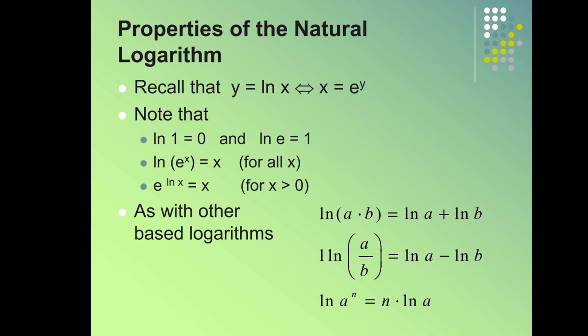ln of e to the x equals x for all x. e to the ln x equals x for x greater than 0. As with other based logarithms: ln of a times b equals ln a plus ln b, ln of a over b equals ln a minus ln b, and ln of a to the n equals n times ln a.